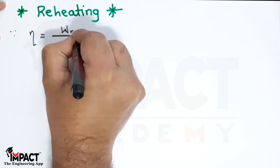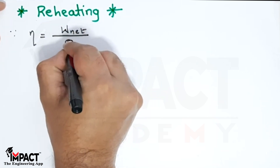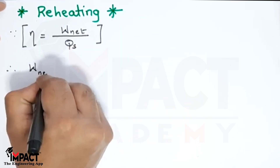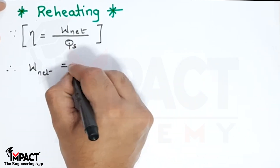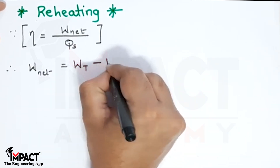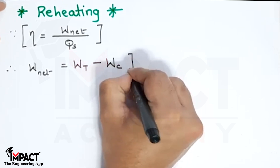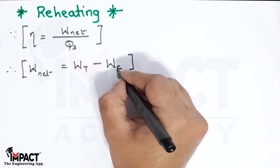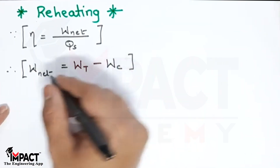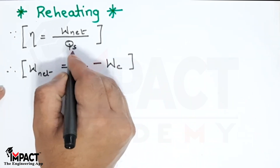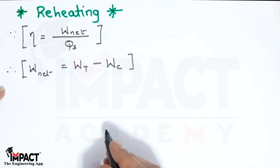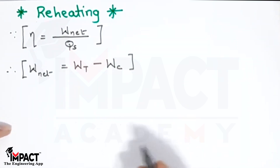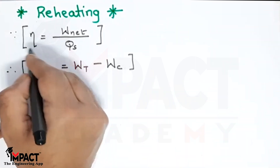Efficiency, denoted as eta, is given by W_net upon heat supplied. W_net is the net work available to us, that is turbine work minus compressor work. Heat supplied is the amount of fuel used in the combustion chamber to heat the compressed air coming from the compressor.